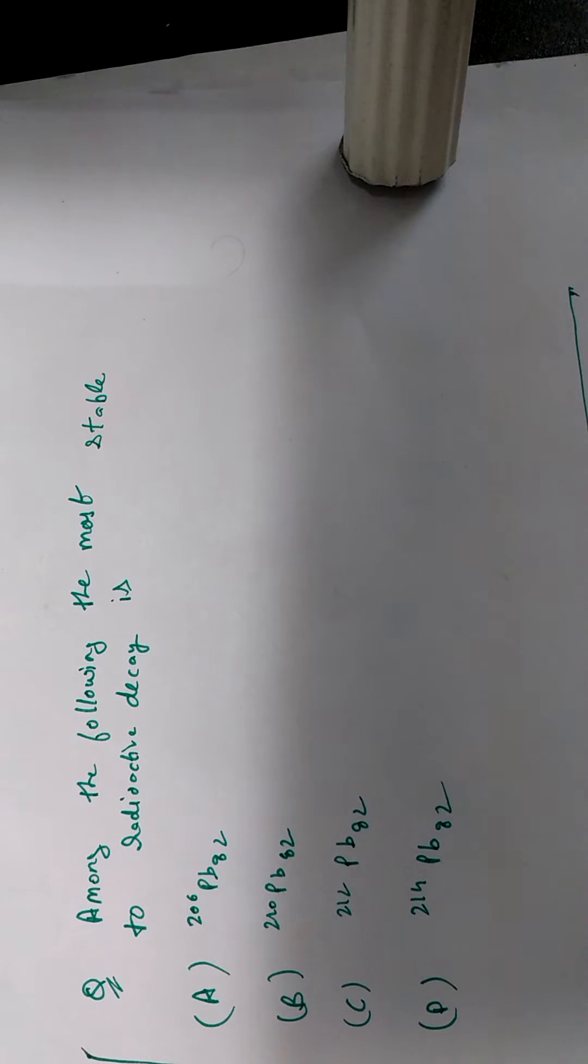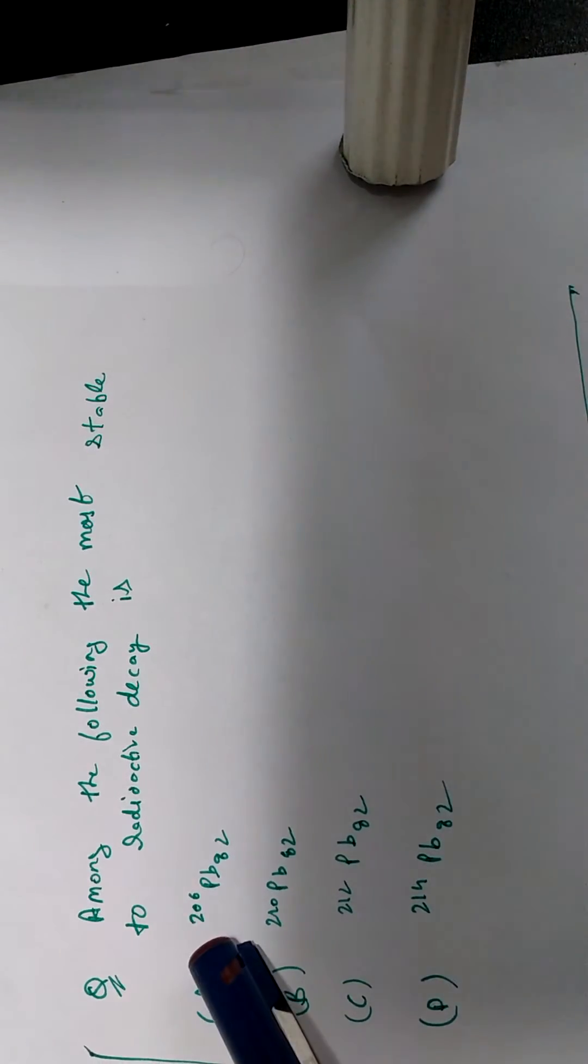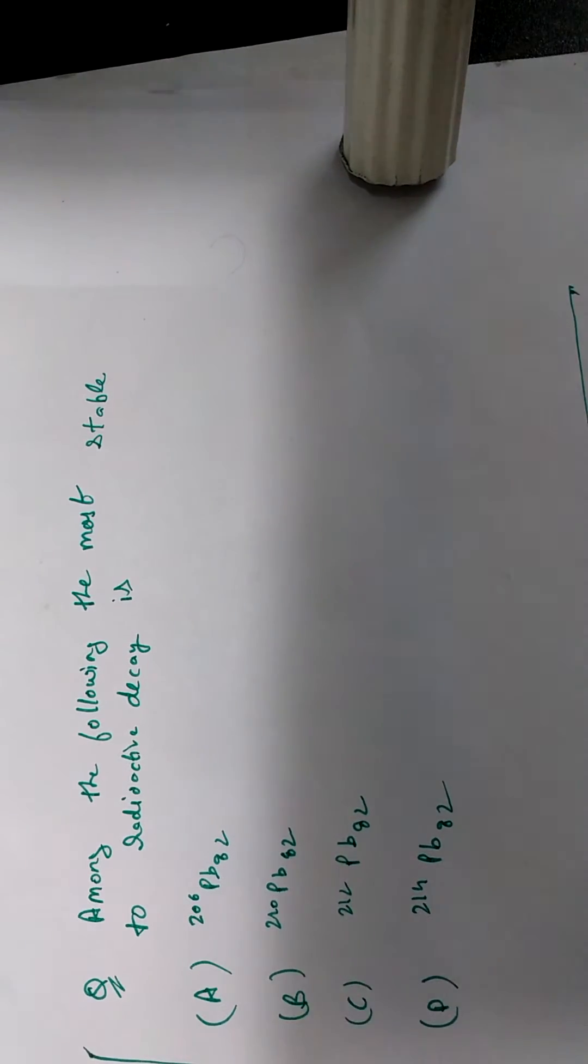Alright, so this question was asked in GATE 2016 and the question says that among the following compounds the most stable to radioactive decay is. So these are the four options. One is 206 PB82, 210 PB82, you can read these options.